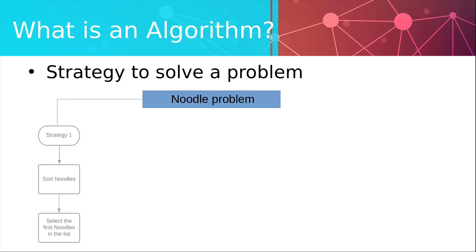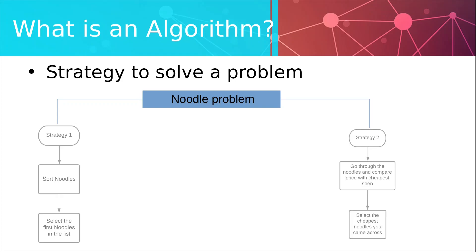Let's proceed to the second strategy. We can simply go through the noodles and always remember what is the cheapest package of noodles we have seen so far and when we reach the end just go back to this one. This is a much simpler way and more efficient. But it is still a completely valid strategy to solve the same problem.